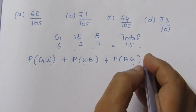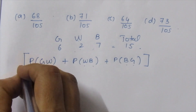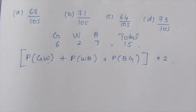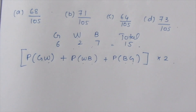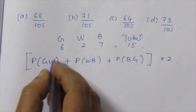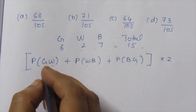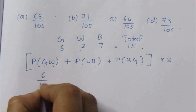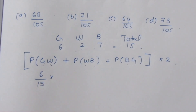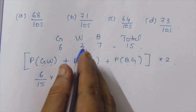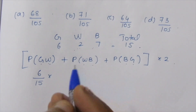What is the probability of green or white? The probability of green is 6 by 15. Next, the probability of white is 2 by 15.